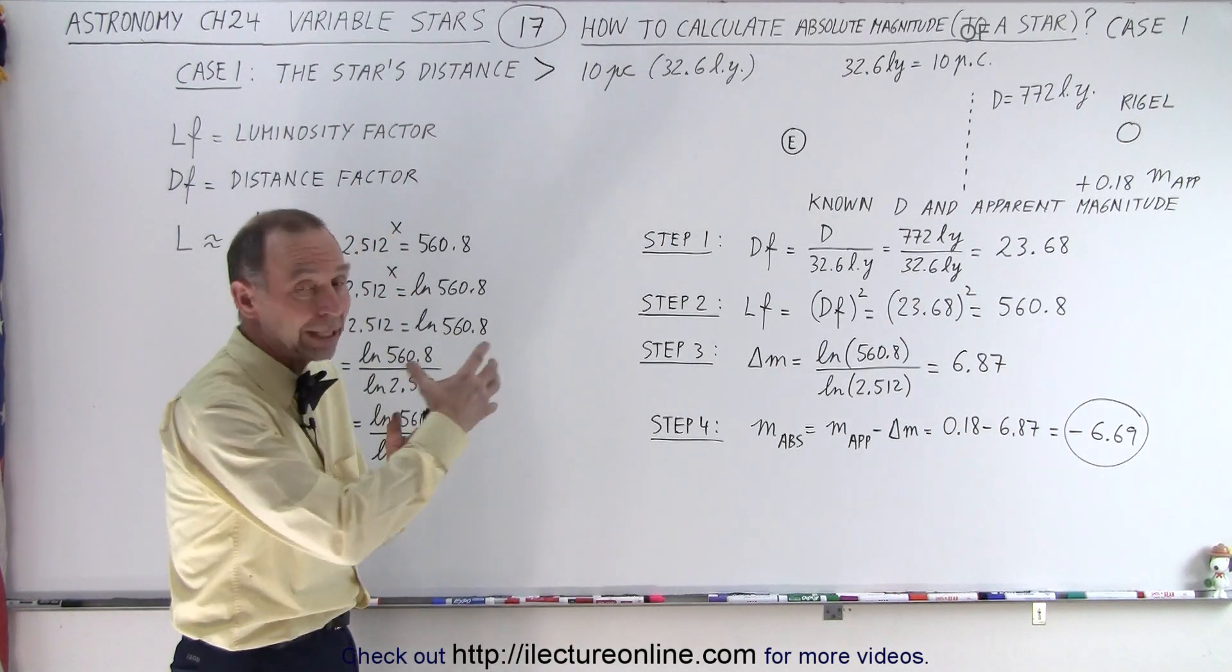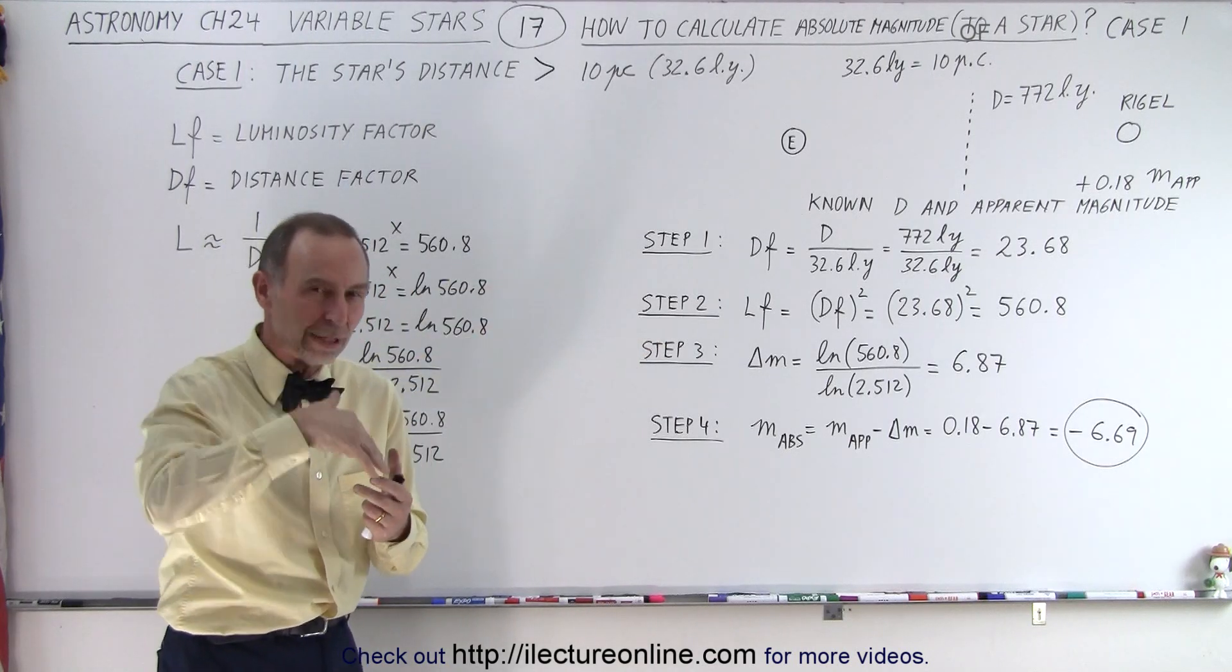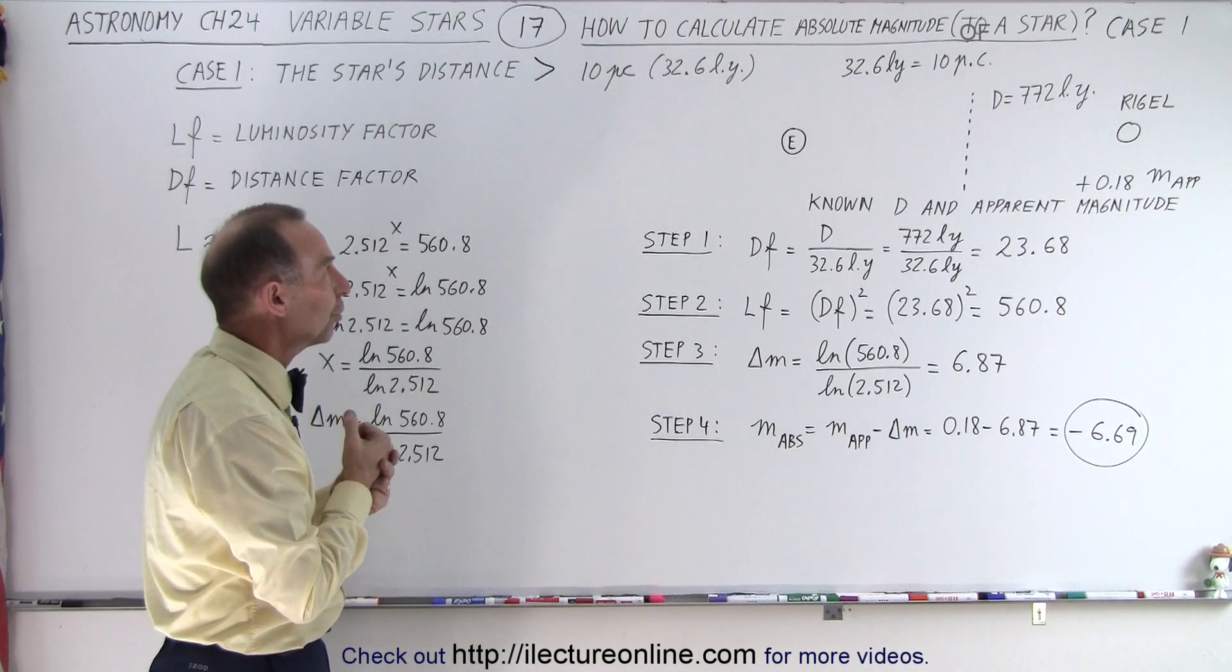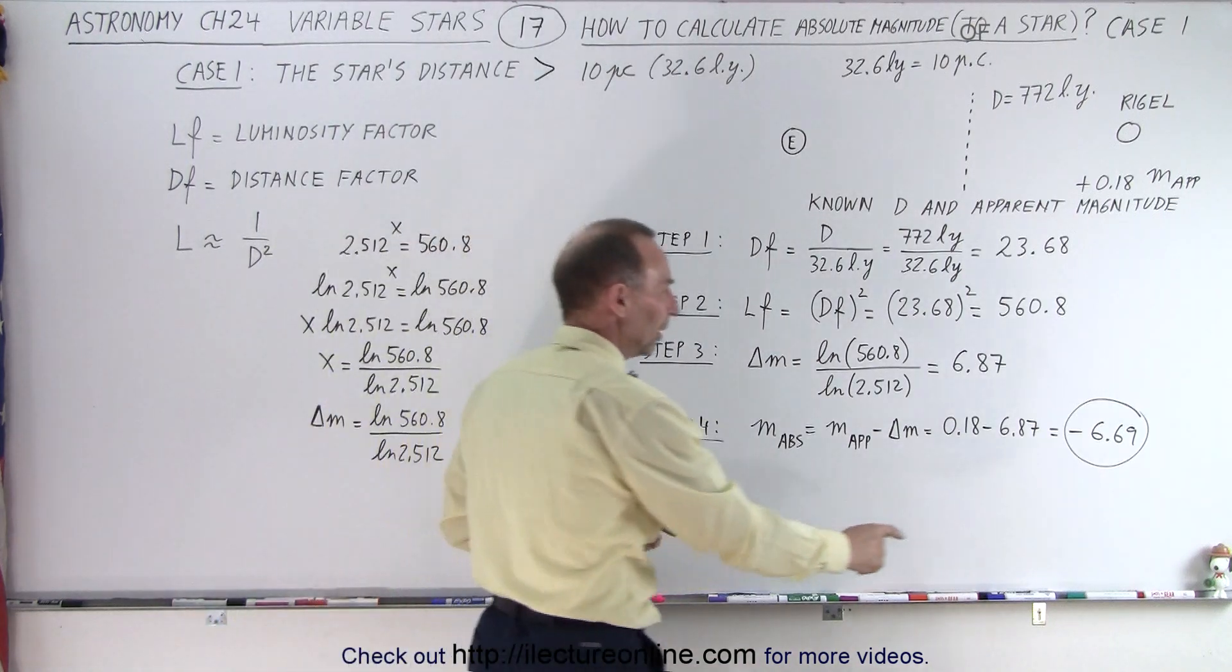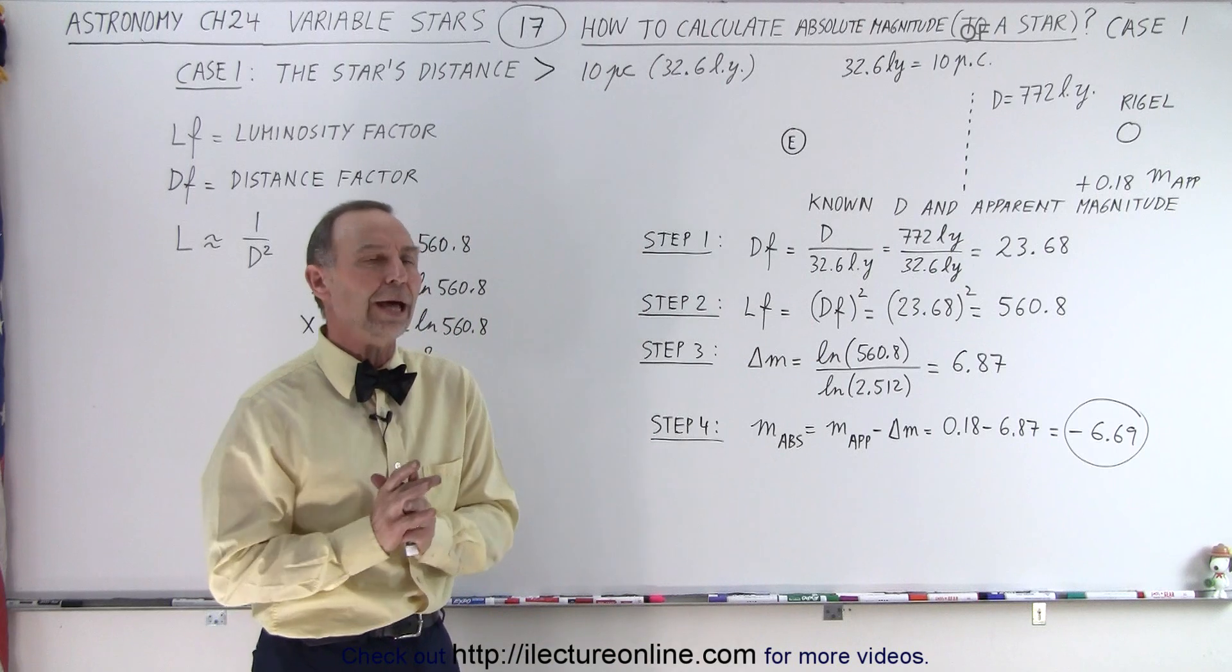The first case is when the star, like Rigel, is much farther away than 10 parsecs, and the second case we'll do next when the star is closer than 10 parsecs. So, what are we trying to do here? We're trying to find the absolute magnitude, and we know for Rigel it was minus 6.69, but how do we do that?